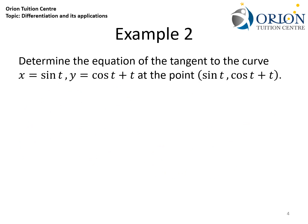Other than finding the equation of tangents and normals at particular points, we can also obtain general equations of tangents and normals by using a general coordinate. For Example 2, we shall determine the general equation of a tangent to a curve defined parametrically as x equals sin t, y equals cos t plus t, with the point of interest being (sin t, cos t plus t). We do not substitute any particular value of t; instead we let t be any real value.